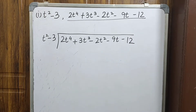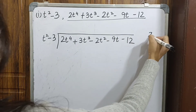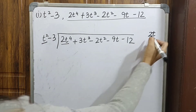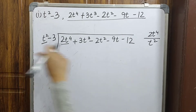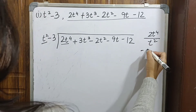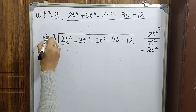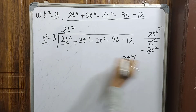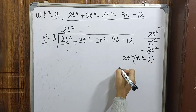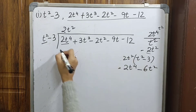We divide the first term of the dividend by the first term of the divisor: 2t⁴ divided by t² gives 2t². We then multiply 2t² by the whole divisor (t² - 3), giving 2t⁴ - 6t². We write this below the dividend.